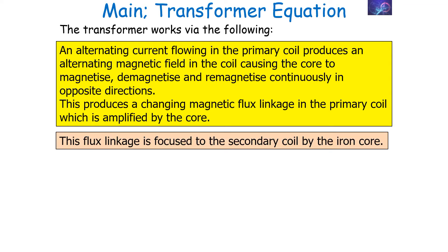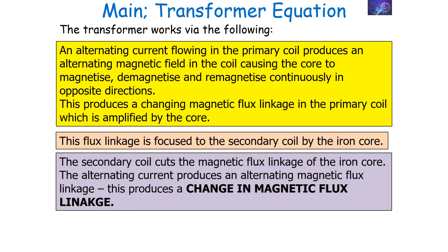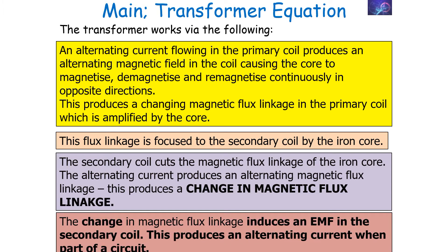This flux linkage is then focused to the secondary coil by the core of the transformer. The secondary coil cuts the magnetic flux linkage of the iron core, and the alternating current in the primary coil produces an alternating magnetic flux linkage, leading to a change in magnetic flux linkage for the secondary coil. As a result, the change in magnetic flux linkage induces an EMF in the secondary coil, and this produces an alternating current when part of a complete circuit.